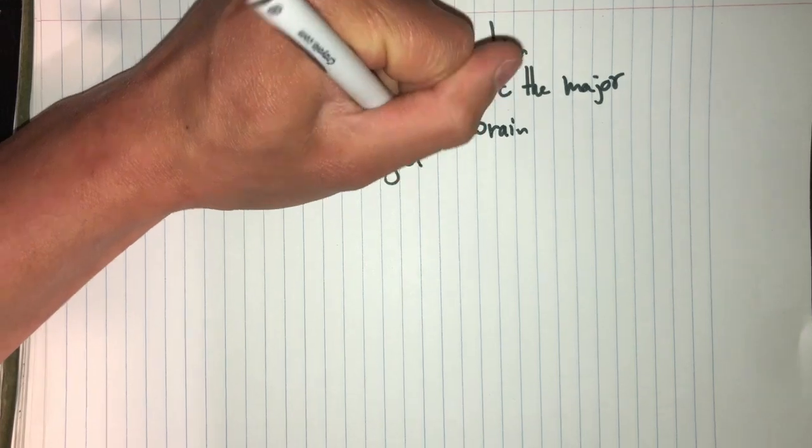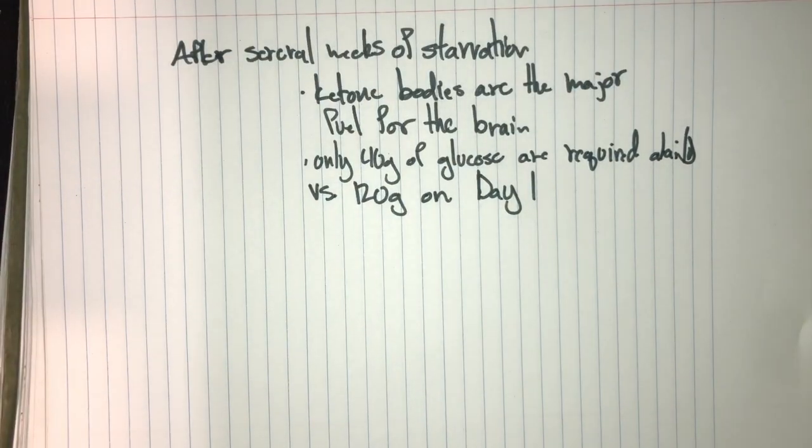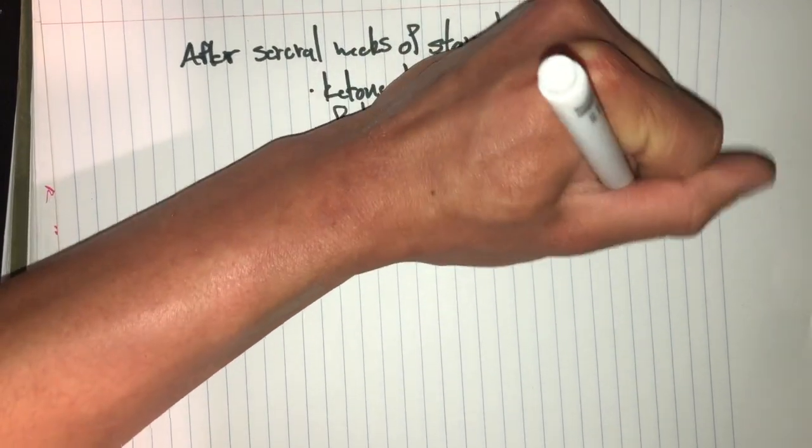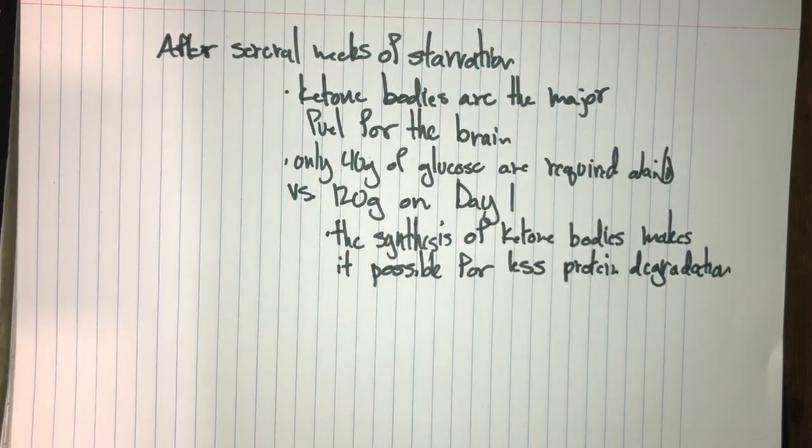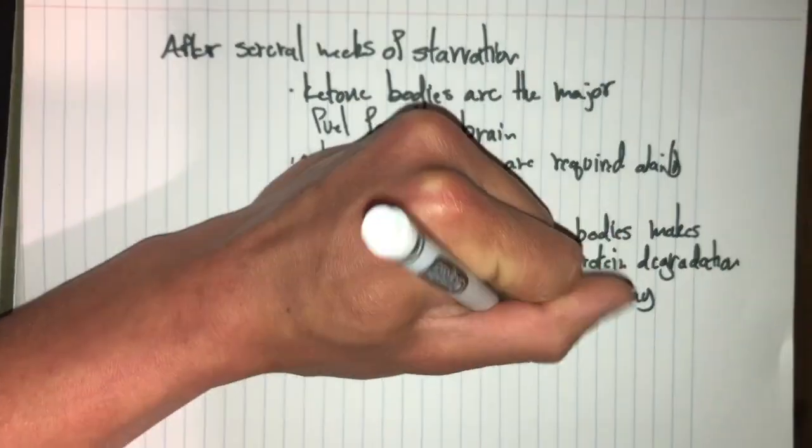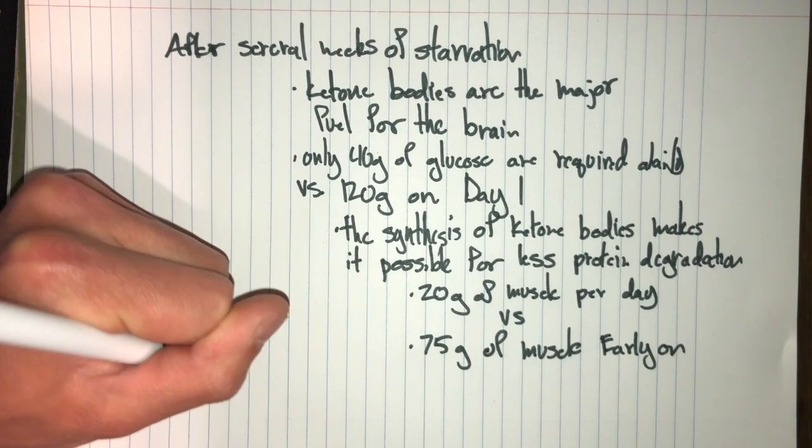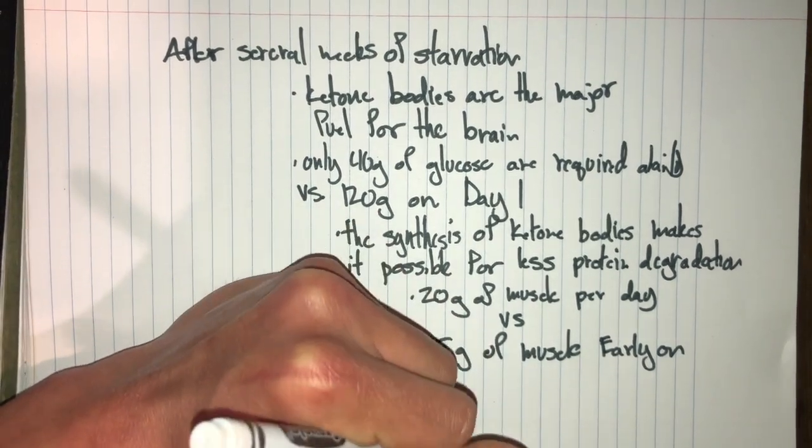After several weeks of starvation, ketone bodies become the major fuel for the brain. Only 40 grams of glucose are required versus the 120 grams that are required on day one, so the body has made a major shift. The synthesis of ketone bodies makes it possible for less protein degradation. When we're on these weeks of starvation, we see 20 grams of muscle per day are lost, whereas early on, 75 grams of muscle are lost. And yet, when triacylglycerol stores reach zero, only protein remains, and this can lead to death of the organism.